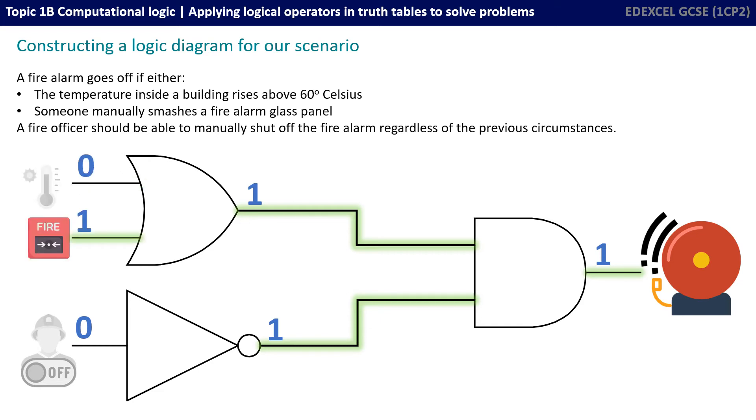In a similar situation, here the temperature is below 60 so the input is zero but someone smashed a fire alarm point. So, that input is a 1.